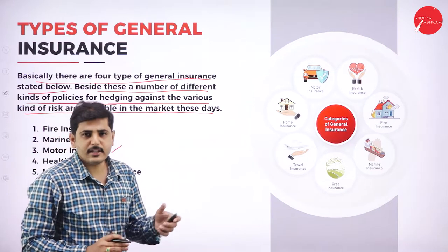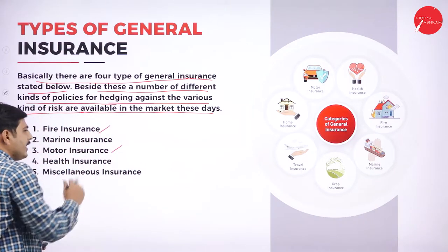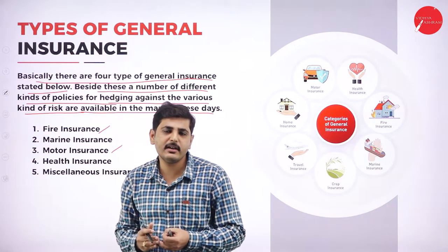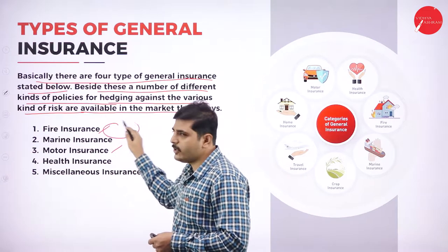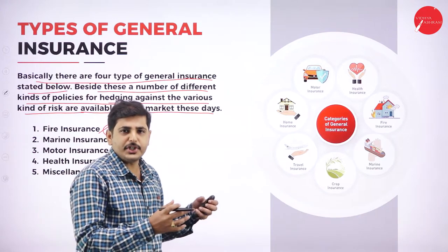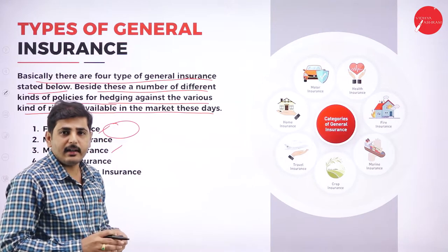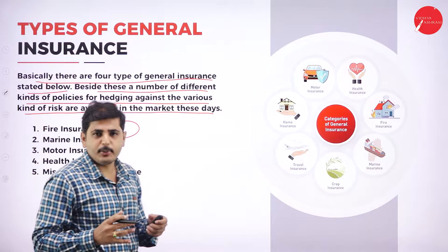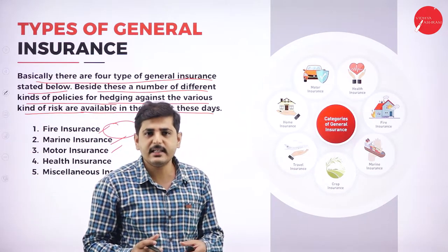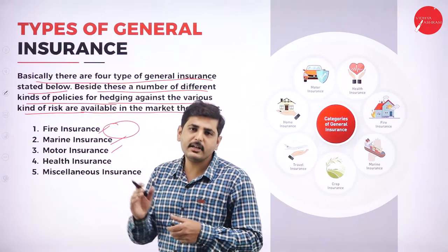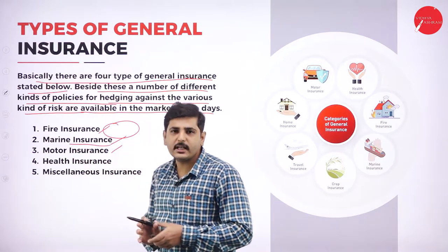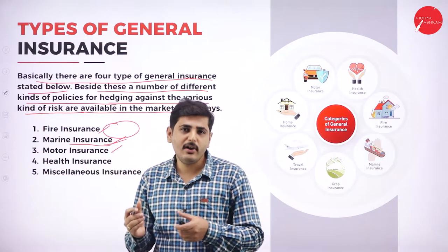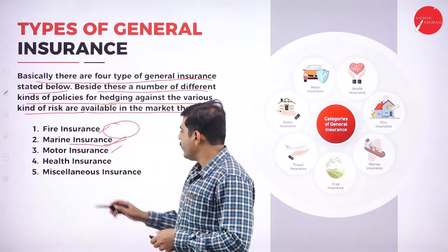Fire insurance is an insurance policy which covers damage under any fire — it may be goods in storage or in a godown. For example, goods destroyed because of fire or because of electrical fire. Marine insurance means goods transported through sea. If any goods are damaged because of accidents during sea transportation or during the voyage, marine insurance provides the benefit or pays the amount for the loss or damage.